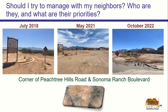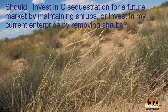Another question: I have a complex problem, maybe about the need for fire or an erosion problem — should I try to manage with my neighbors? But then the second question is: who are my neighbors, because they seem to always be changing, especially with land use change. And in terms of carbon markets, we're learning that maintaining shrubs on the landscape might be our best bet for sequestering carbon, but removing those shrubs could mean investing more in our current enterprise. That's a real trade-off that comes up in these variable and shifting landscapes.